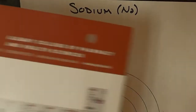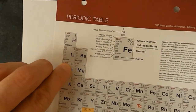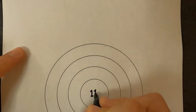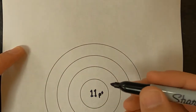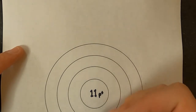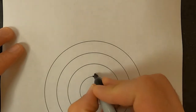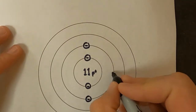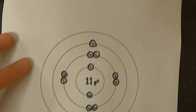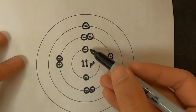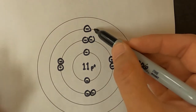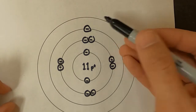Next is sodium: it will have 11 protons in the nucleus and 11 electrons. Remember that in the Bohr model only two electrons can fit in the first ring. So for sodium, the Bohr model has the first ring full, the second ring full, and the third ring with only one electron and the fourth ring empty.